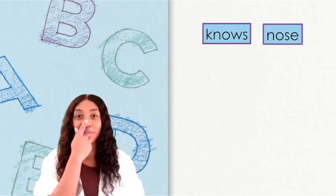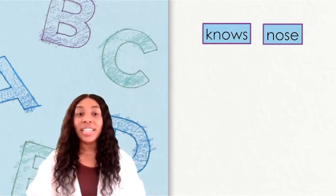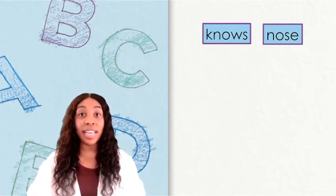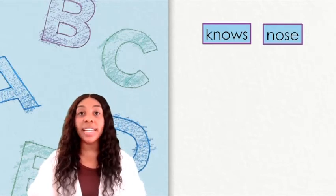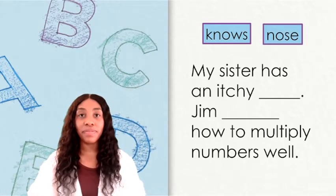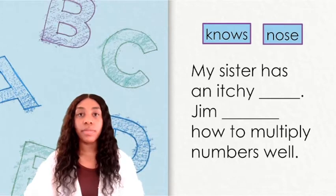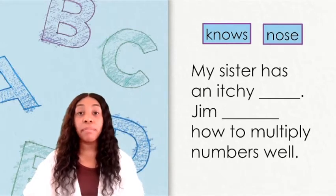As you can see, we have our nose right here on our face. Let's take a look at a sentence to see which nose belongs in each of the blanks. Here's our sentence. My sister has an itchy blank. Jim blank how to multiply numbers well.